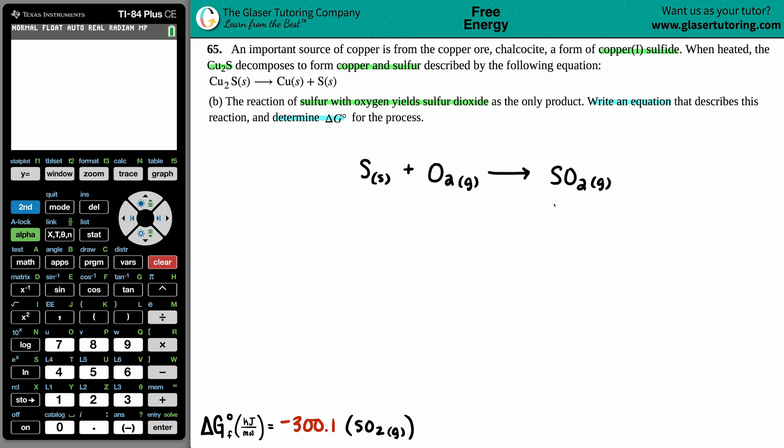Now we just have to determine that Gibbs free energy. It's a standard, right? There's a naught here which means that I can go in the back of the book and find out all of the delta G values for each individual component. So I wrote the one that we're going to use for the sulfur dioxide. Sulfur dioxide's delta G is negative 300.1.